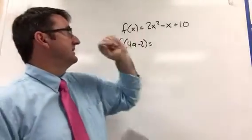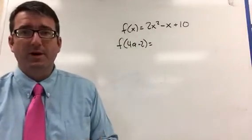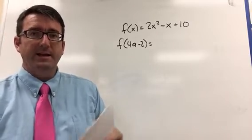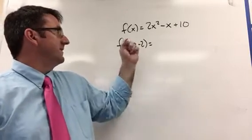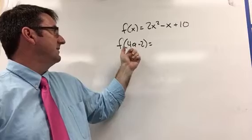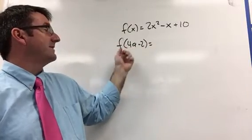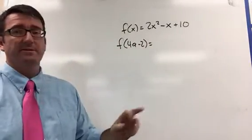Alright, for number 2 we're given this function f of x equals 2x squared minus x plus 10 and we're asked to evaluate this function at f of, we're asked to find f of 4a minus 2.